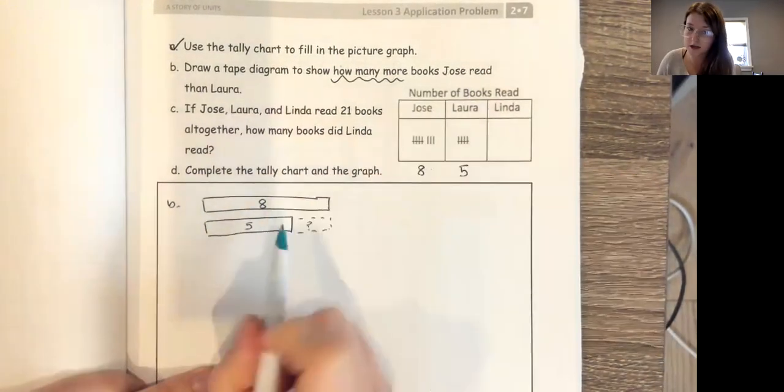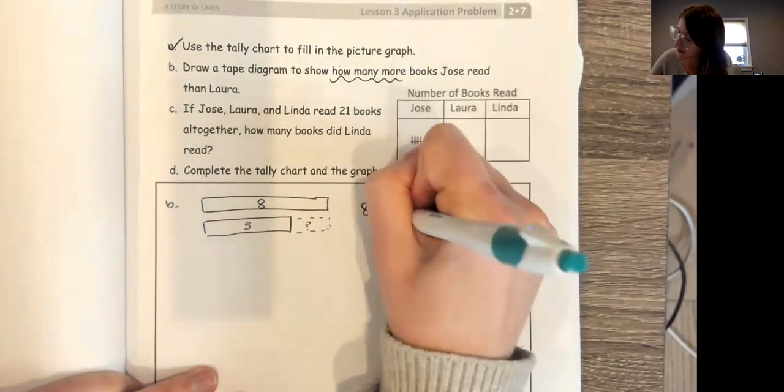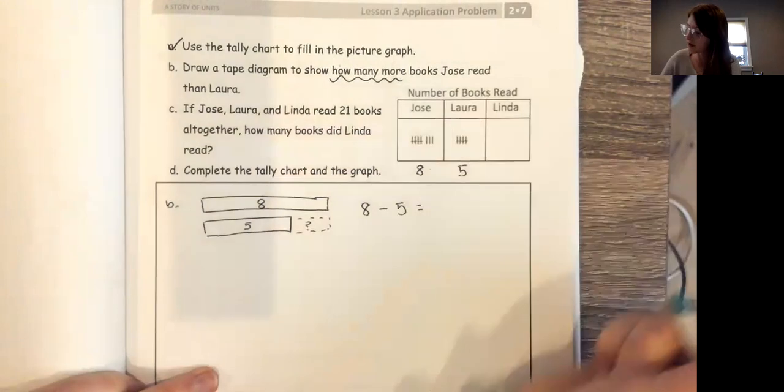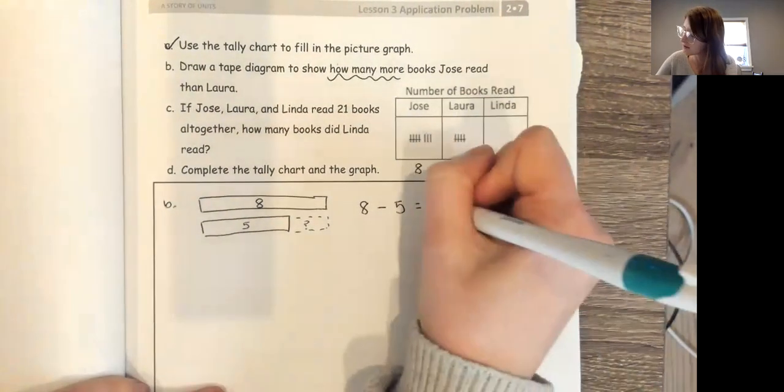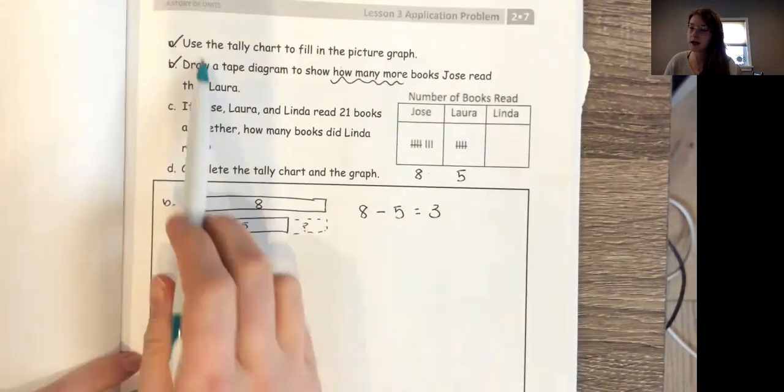I know Jose read eight books and I know that Laura read five. So my number sentence is gonna match exactly what I did in my tape diagram: eight minus, because we're doing subtraction - remember it's a comparison problem - eight minus five, that's pretty easy. That is three. Great. So I did A and I did B.